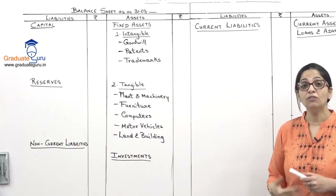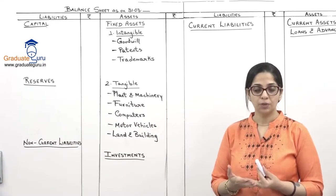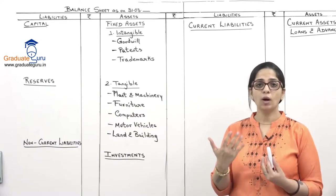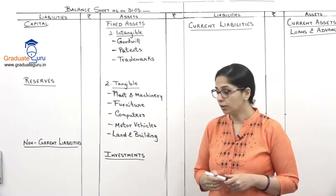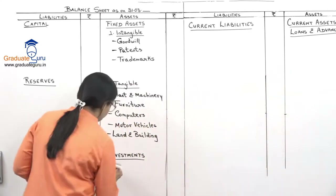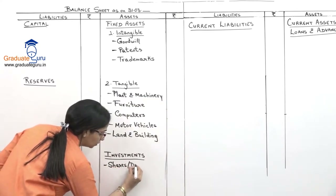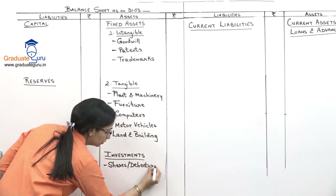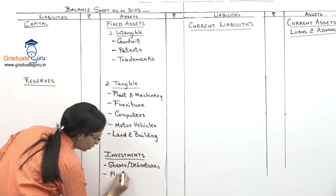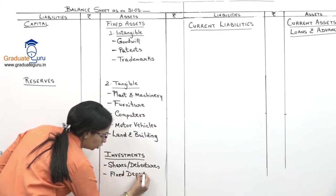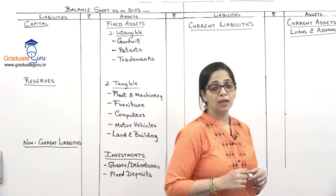Then we have investments. Investments means I have put money in some other business to earn income. There is no other benefit other than earning income from it. I may buy shares or debentures of some other company. I may also have fixed deposits with a bank, which will also be my investment. Not the normal bank balance, but fixed deposits with bank come under investments.